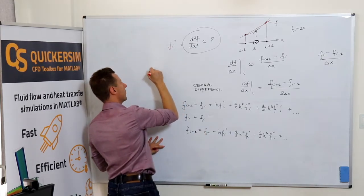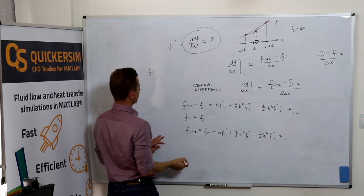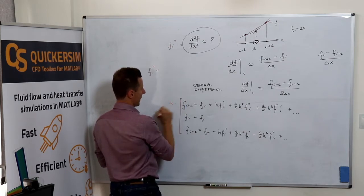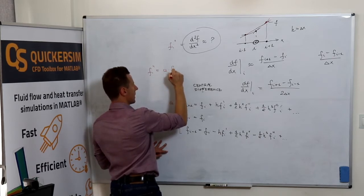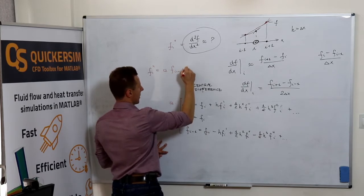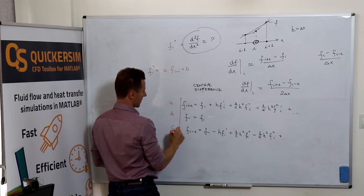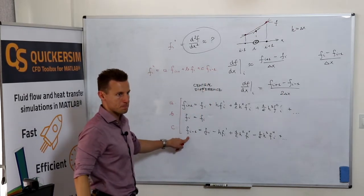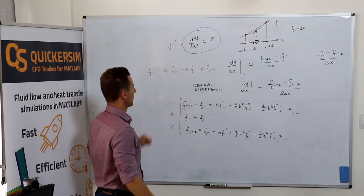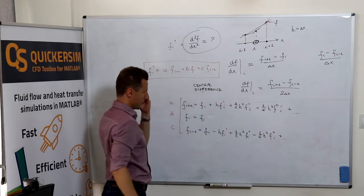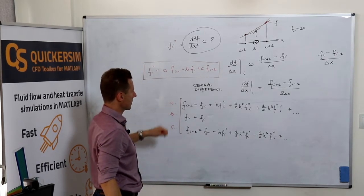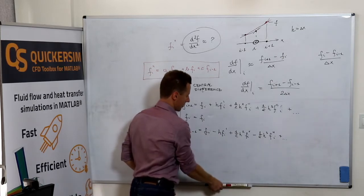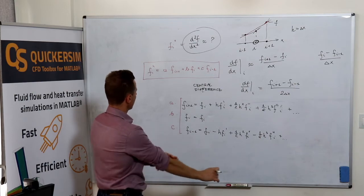We can write that the second derivative of f_i would be something like a times f_{i+1} plus b times f_i plus c times f_{i-1}. We want to approximate the second derivative by this linear combination, so we need to write the system of linear equations that, once fulfilled, give us exactly what we want. We require that f_i vanishes completely.